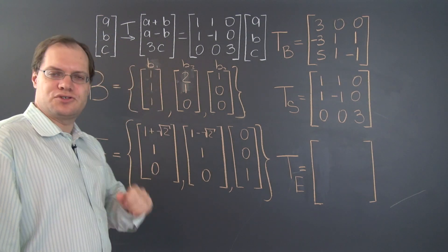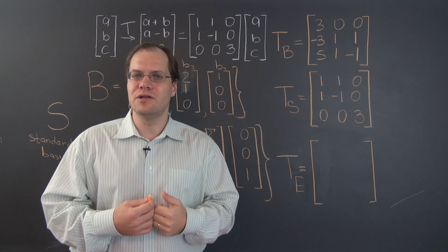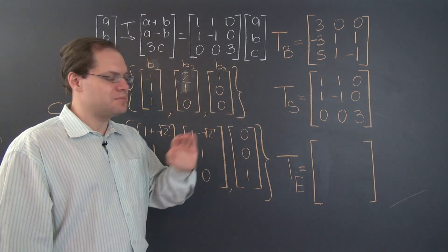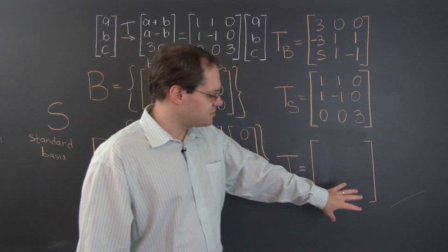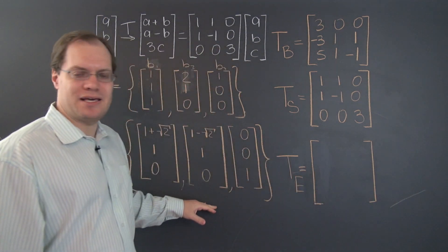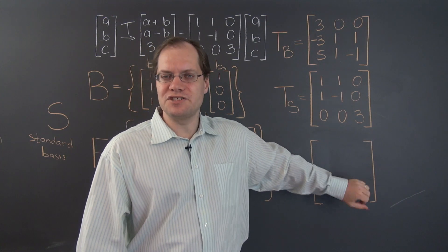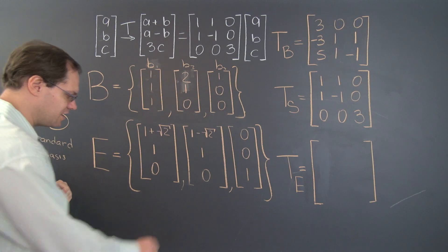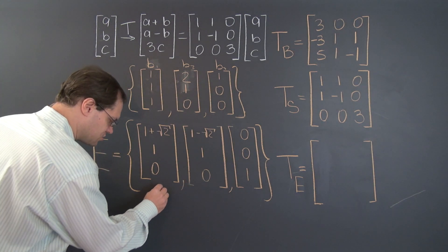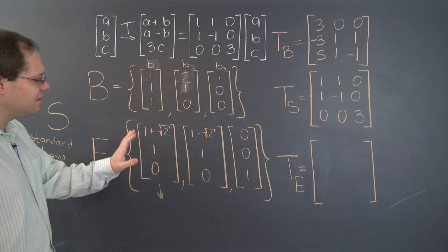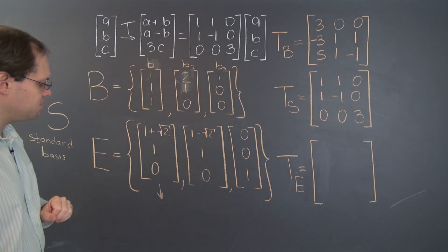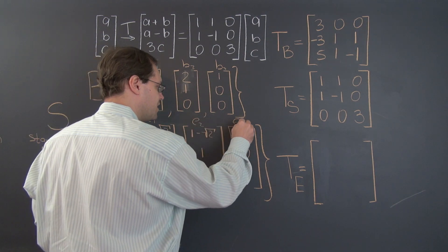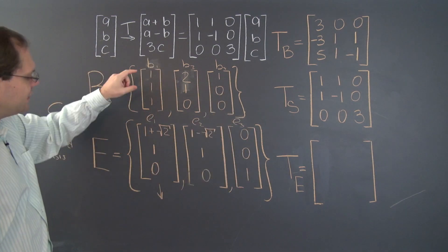Let's pursue the same strategy we've been practicing all along: applying the linear transformation to each one of the basis elements, decomposing the result with respect to the same basis, and putting the resulting coefficients as the columns in the matrix. Let's start with the first one — I'm almost out of space, so we'll draw an arrow — and apply this transformation to the first basis element. Let's call them E1, E2, E3.